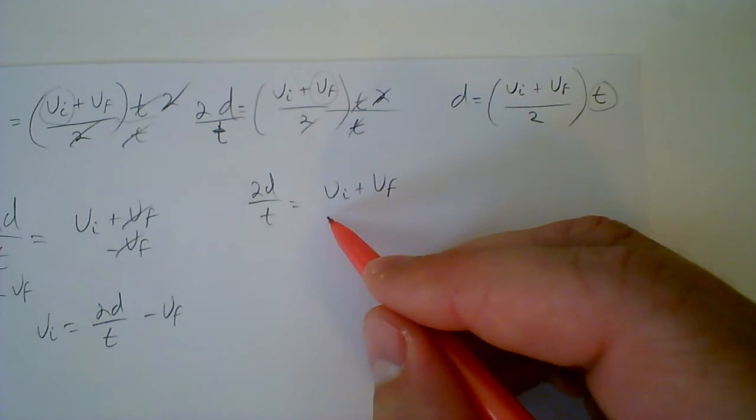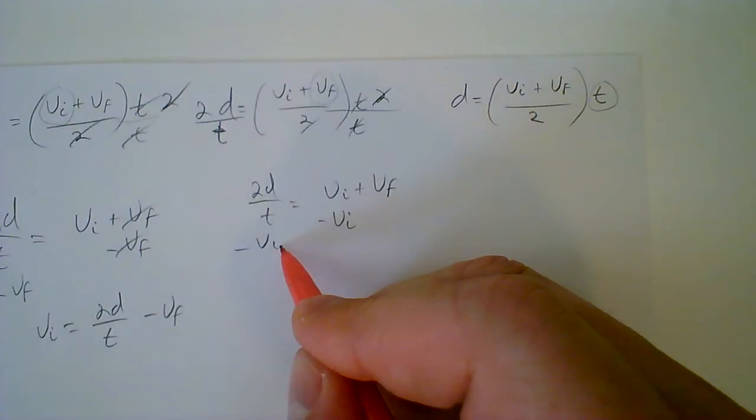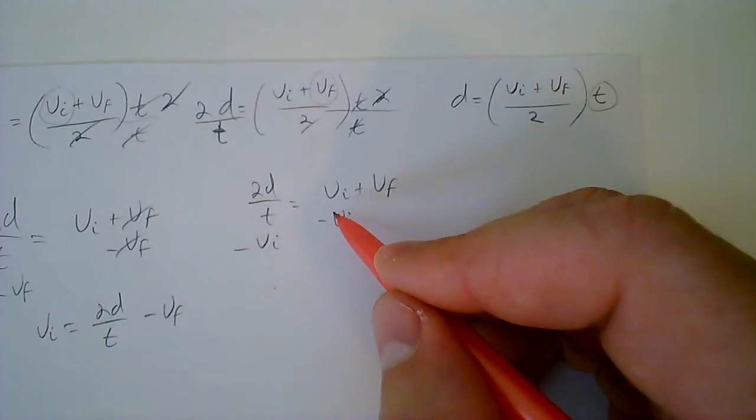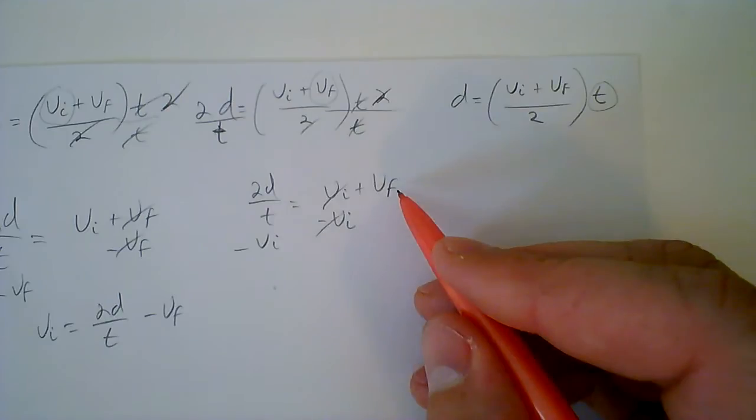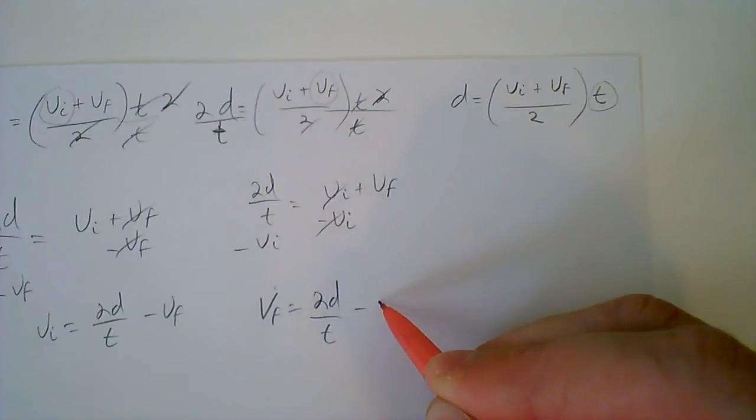And we want to, in this case, subtract vi. So we get minus vi here, and at the very end, vf equals 2d over t minus vi.